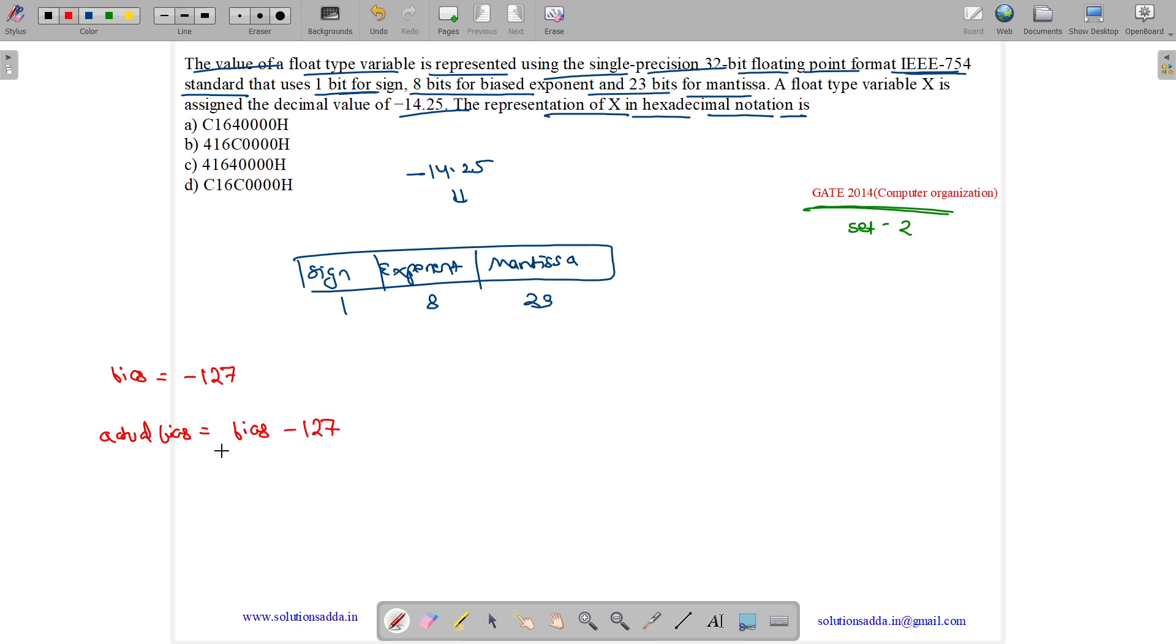So actual bias equals our bias value minus 127. Biased exponent minus 127 equals actual bias. Now coming to our question, our value is minus 14.25.